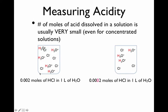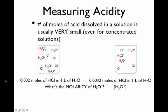So the left container has 10 times as much hydrochloric acid — two zeros after the decimal point versus three zeros on the right. The left container is 10 times more concentrated. The question is: can you describe the acid concentration numerically? One way of asking this is: what is the molar concentration of H3O+ in each container?